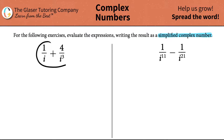So on the left-hand side, we have one divided by i plus four divided by i to the third. In the last question that we've done, we went over what i means, and i squared, i to the third, and i to the fourth. So just to recap: